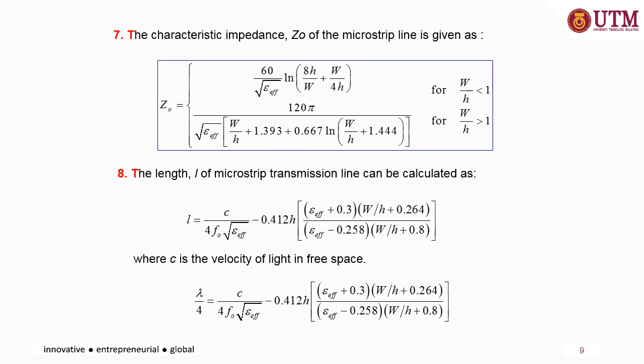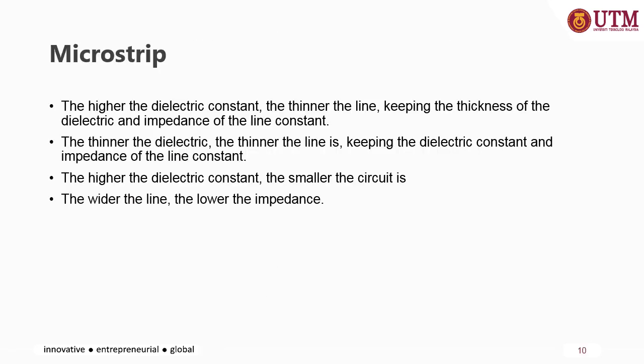Equations 7 and 8 represent the characteristic impedance Z-naught of the microstrip line and the length of the microstrip line, where C is the velocity of light in free space, related to the wavelength of the targeted frequency band. Additional information: the higher the impedance and the higher the dielectric constant or permittivity, the thinner the microstrip line, keeping the dielectric thickness and impedance of the line constant.